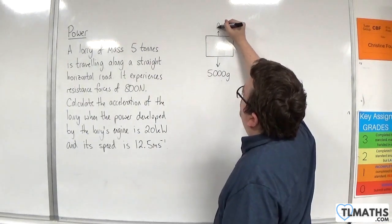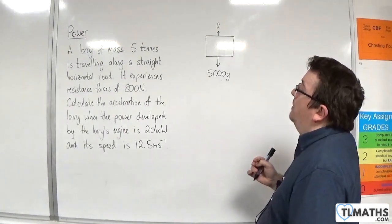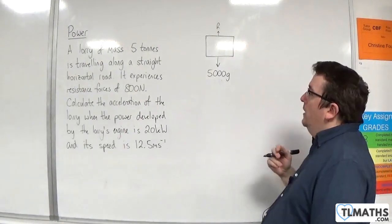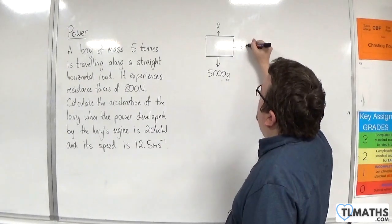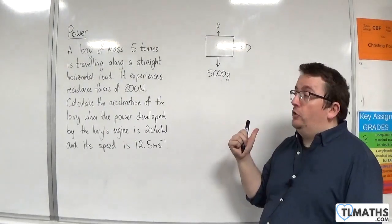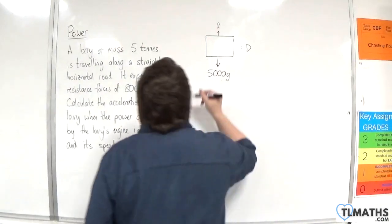Because it's in contact with the surface there will be a normal reaction force. I don't think we're going to need it in this problem but I'm just going to add it to my diagram. We've got the driving force from the engine and I'm going to take that it's travelling to the right. And then we've got the resistance forces of 800 newtons.